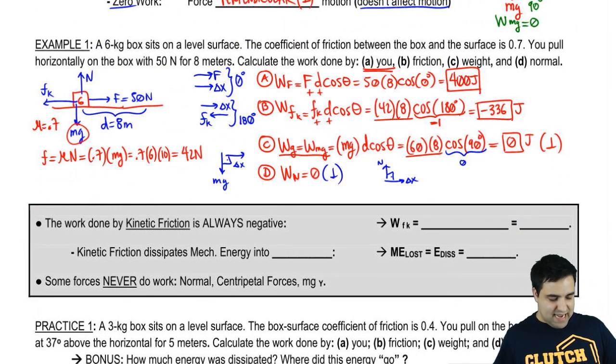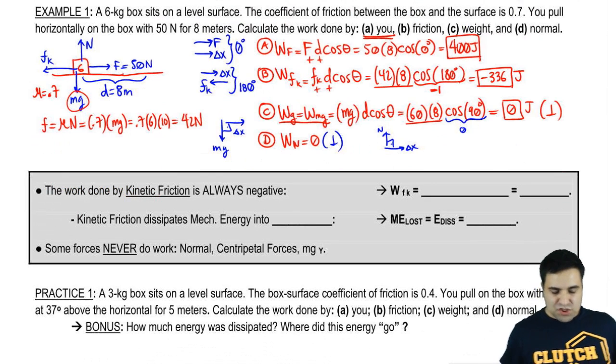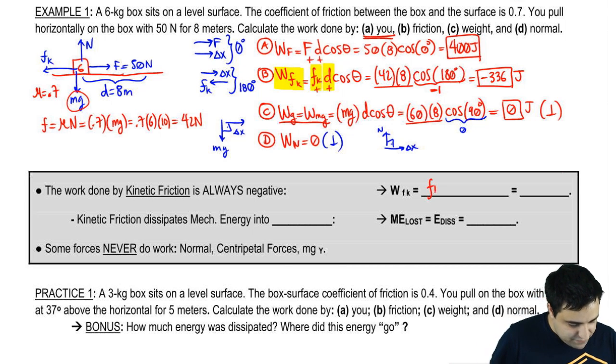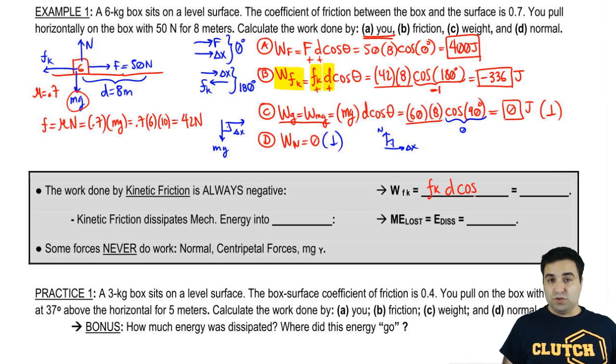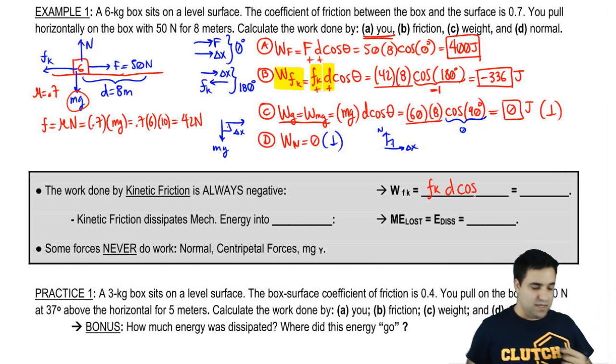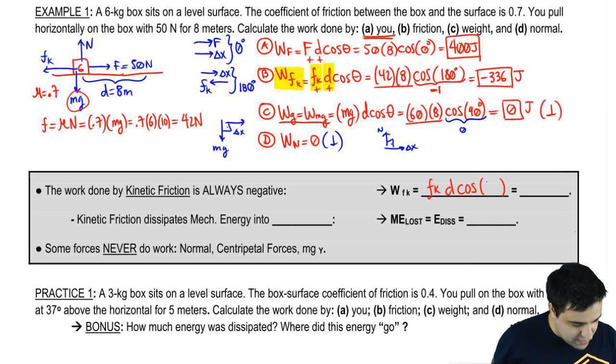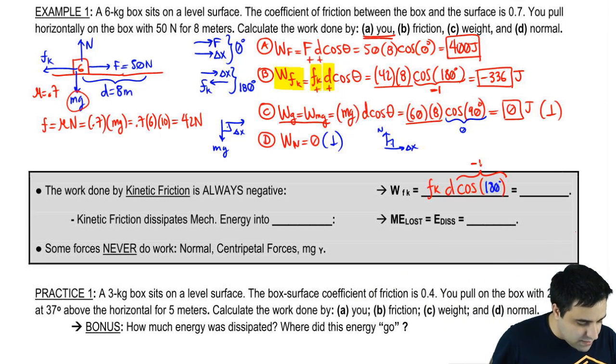Hopefully you got that. I want to make a few more points here. Here we did the work done by kinetic friction. The work done by kinetic friction was Fk·d·cosine of theta. But kinetic friction will always oppose motion. If you're moving this way, kinetic friction is this way and vice versa. So no matter which way you're going, this angle here will always be 180 for kinetic friction. The cosine of 180 is negative 1.